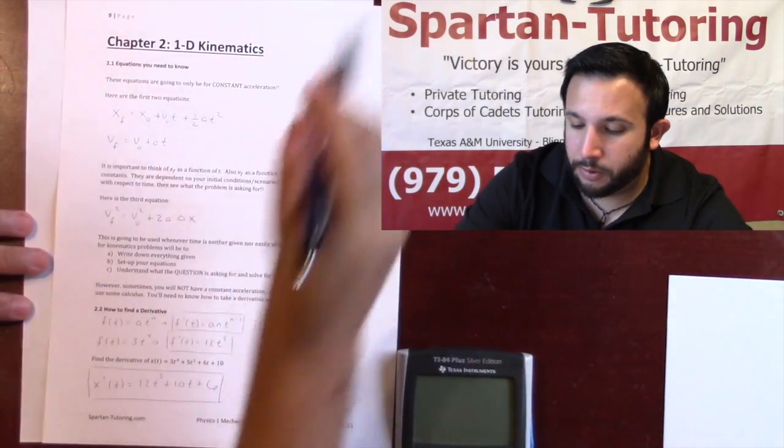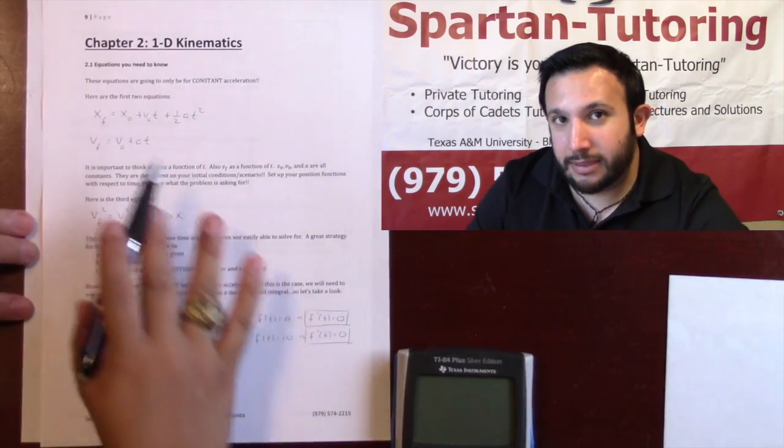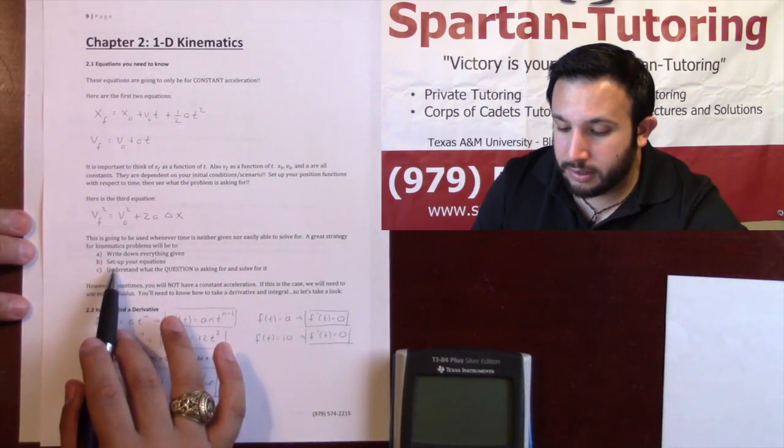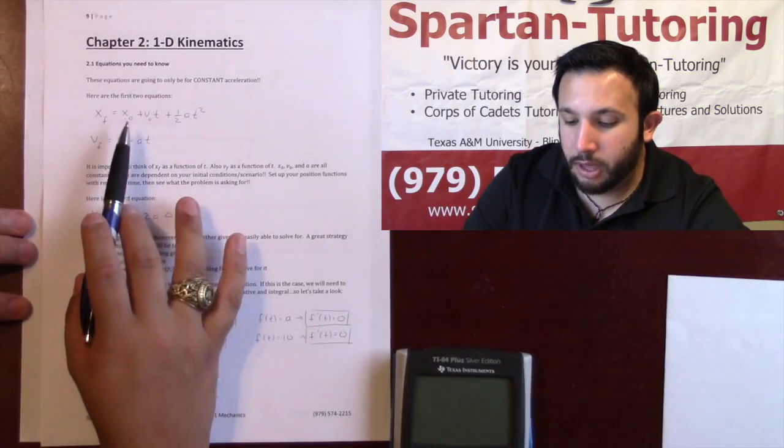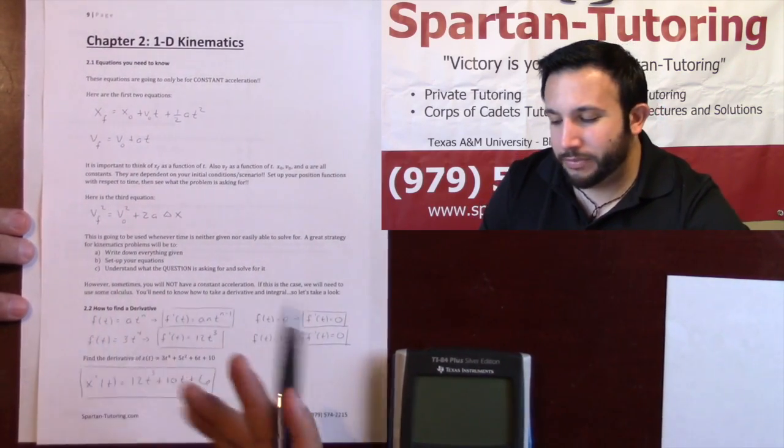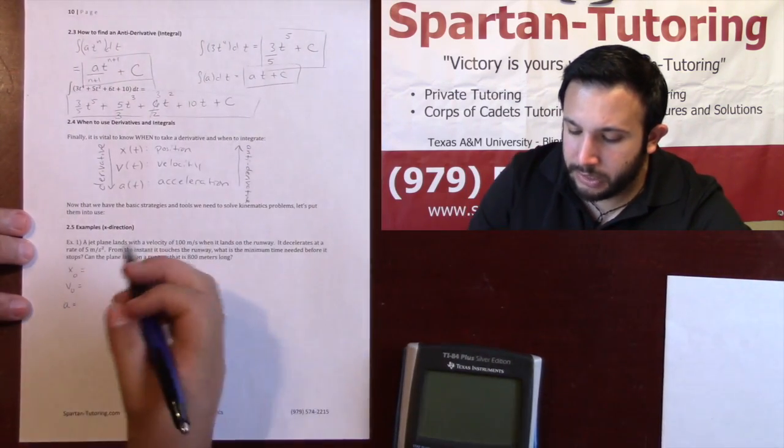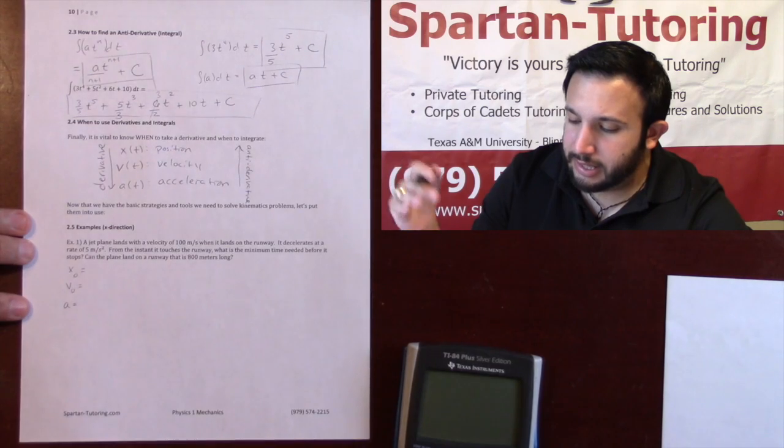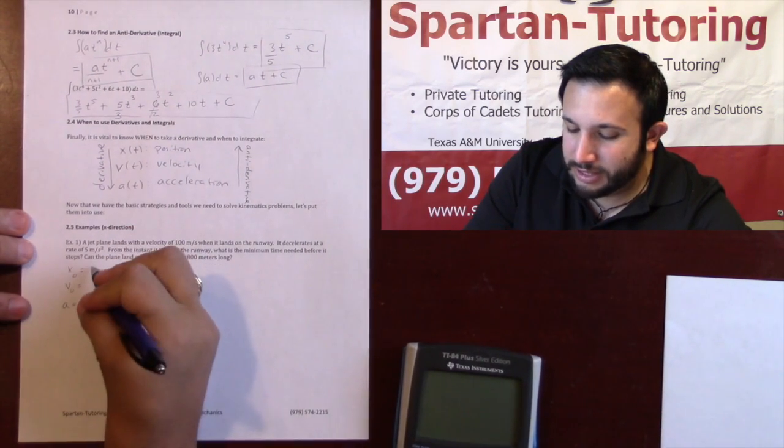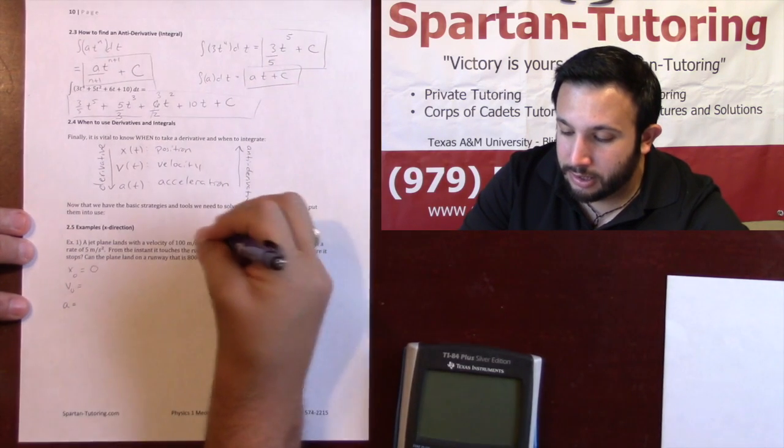Notice that I have a constant deceleration, and whenever you have a constant acceleration, we're going to be utilizing these two equations. Once you have x₀, v₀, and a, we're going to plug these numbers in and then really understand the question to see what it's looking for. Since it lands on the runway we can set our x₀ wherever we want. Let's just call it zero to make our lives easy.